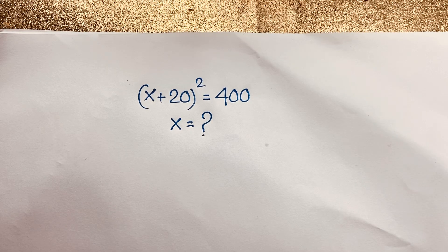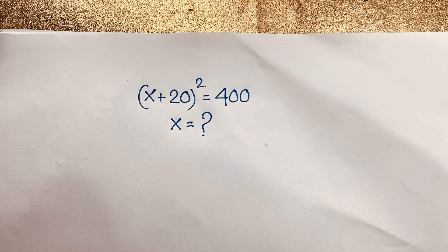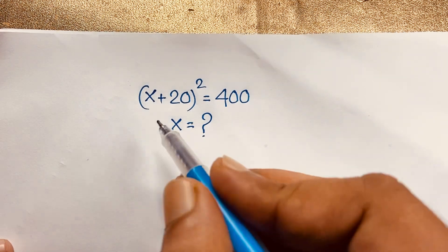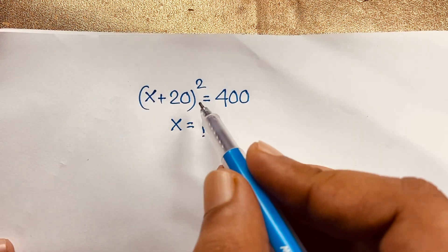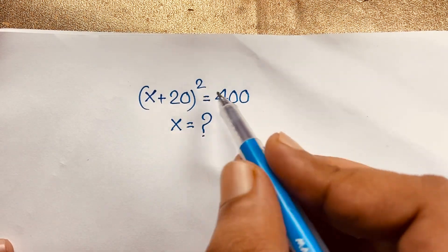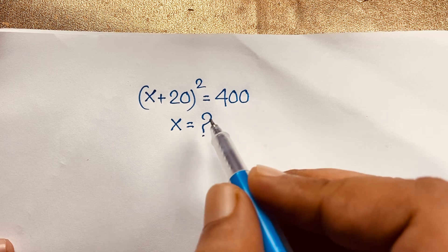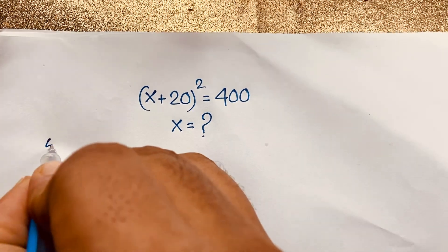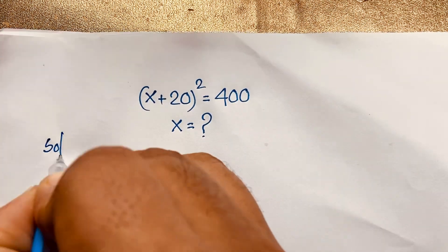Hello everyone, welcome to Russell's Classroom. Today we have solved this algebra problem. This is a math problem which is (x + 20)² = 400. x is equal to what?